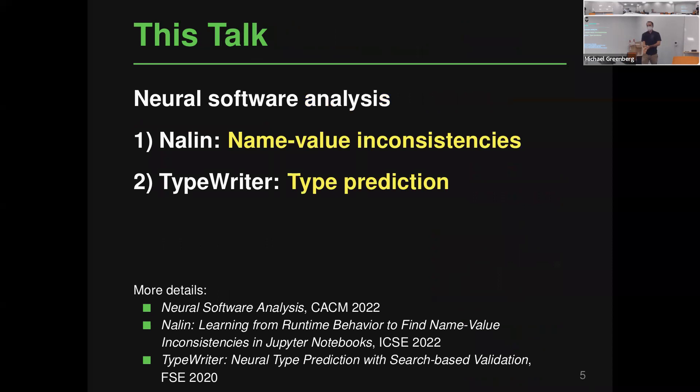In this talk I want to give two examples of neural software analysis we've been working on. The first is called Nalin, a technique to find name-value inconsistencies. The second is called Typewriter, worked on during a sabbatical at Facebook, which is about type prediction — it takes code written in an untyped or partially typed language and predicts type annotations to add. Papers are available if you want more details.